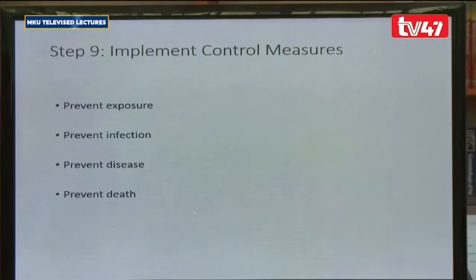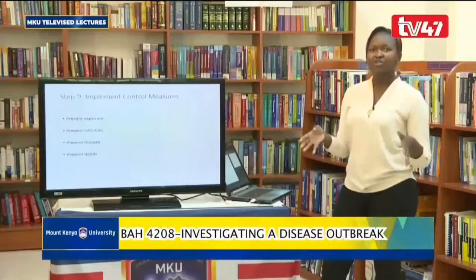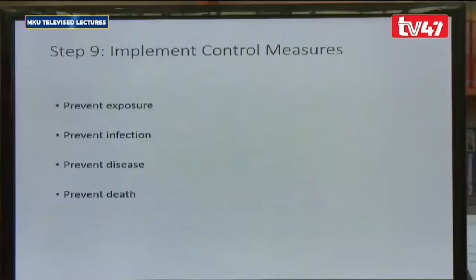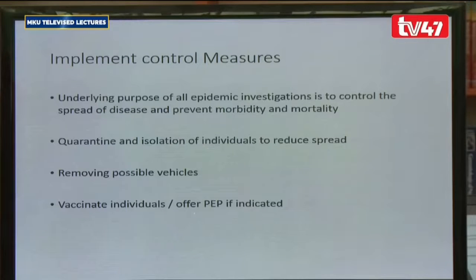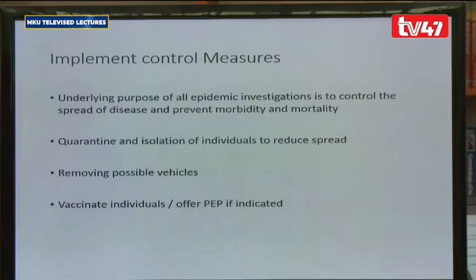Step number nine is to implement control measures. The main reason for outbreak investigation is to prevent and control the disease: prevent exposure, prevent infection, prevent the disease, and prevent death. For COVID-19, this means keeping social distance, washing hands, sanitizing, staying at home, quarantine, and isolation. The underlying purpose of all epidemic investigation is to control the spread of disease, prevent morbidity and mortality. Where possible, vaccination can also be done.